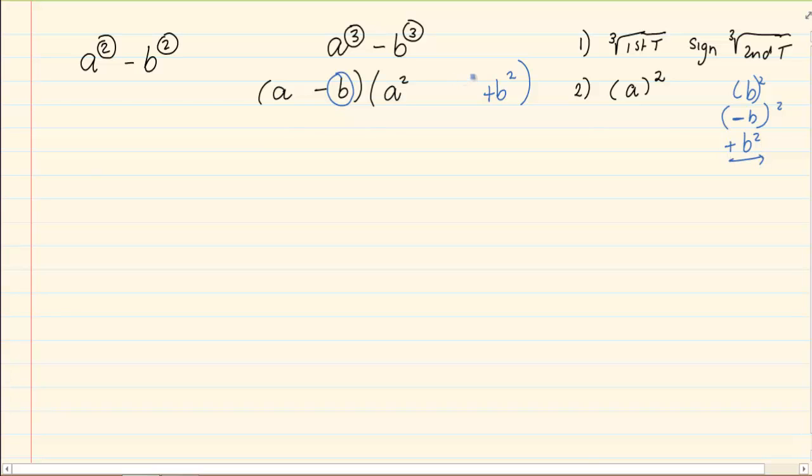How do we get the middle term? The middle term, we're going to take the two values in the first bracket and we are going to multiply it. But we are always going to change the sign which means that I'm going to have plus ab.